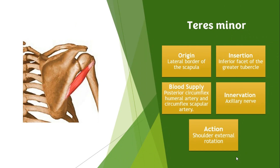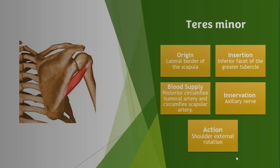Next, we have the teres minor muscle. The teres minor muscle originates from the lateral border of the scapula and inserts on the inferior facet of the greater tubercle. The blood supply is the posterior circumflex humeral artery and the circumflex scapular artery. The muscle is innervated by the axillary nerve. The teres minor muscle performs external rotation, or lateral rotation, of the humerus.